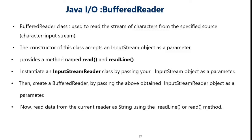If we want to read strings, we wrap this stream into a class like BufferReader which buffers the characters. We are using BufferReader for buffering the characters. There are certain steps for creation of the object of BufferReader, which we are going to see in the example on the next slide. The constructor of this BufferReader class accepts an input stream object as a parameter, and after successful creation of the object we can make use of read and readLine functions for reading values.